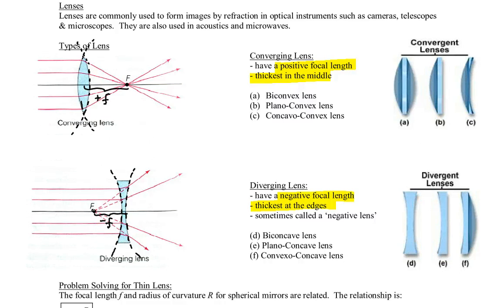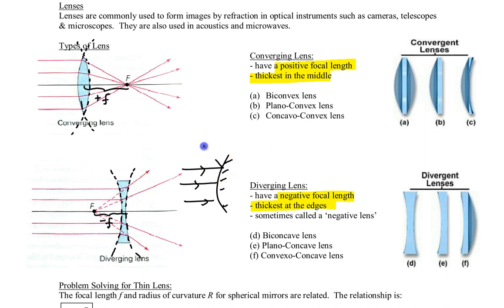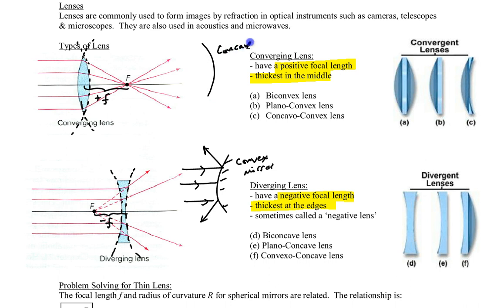The naming also confuses people. A convex mirror is one where light diverges away when it hits — that's called a convex mirror. But a diverging lens is not called convex; it's actually called a concave lens. Similarly, a converging mirror was a concave mirror, where rays converge towards the focal point. But a converging lens is called a convex lens.